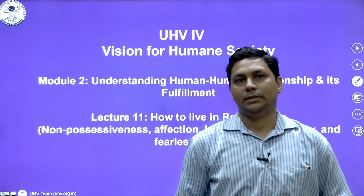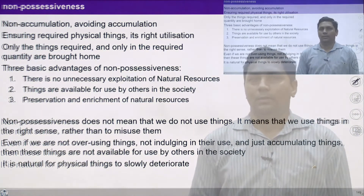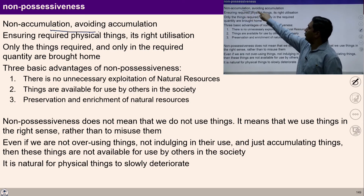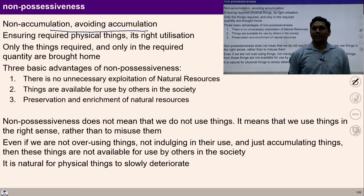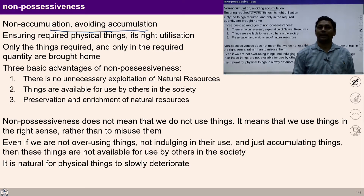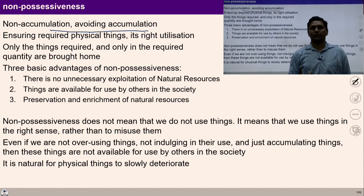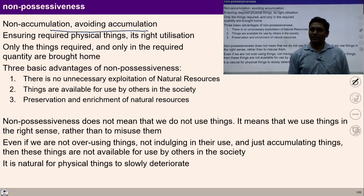Let's see how this formulation is going to help us to live a fulfilling life. Non-possessiveness means non-accumulation, or avoiding accumulation. Non-accumulation literally means lack of accumulation. Accumulation refers to collecting unnecessary items from the perspective of profit and consumption. So non-accumulation refers to income for expenditure — we produce and store only those physical facilities that we need, for the purpose of right utilization.